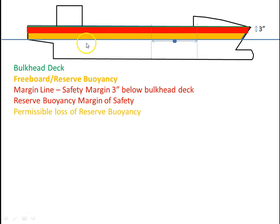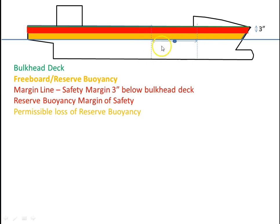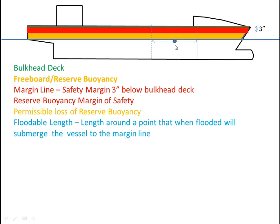Imagine if you choose a point — you could choose a point here or here — but there will be a volume of the ship fore and aft of that point that will end up equaling this yellow bit of reserve buoyancy. This means that if we flooded the ship between these two boundaries, we would sink the ship up to the margin line but not beyond it. This is referred to as the floodable length — a length around a point that, when flooded, will submerge the vessel to the margin line but not beyond.